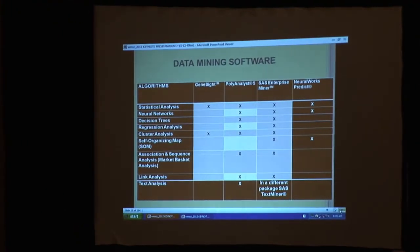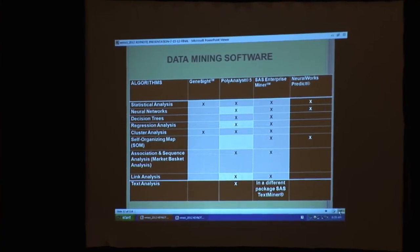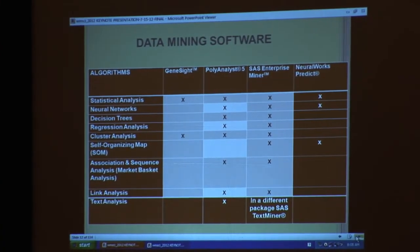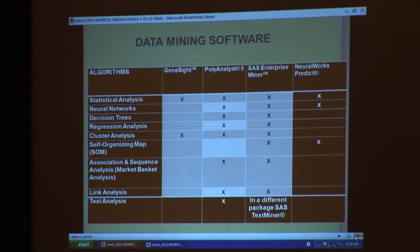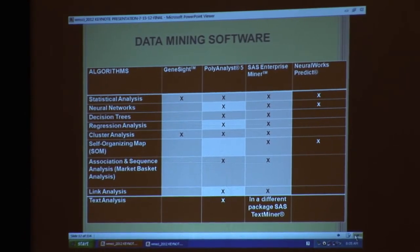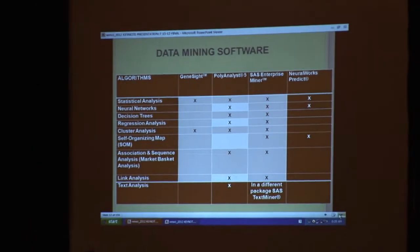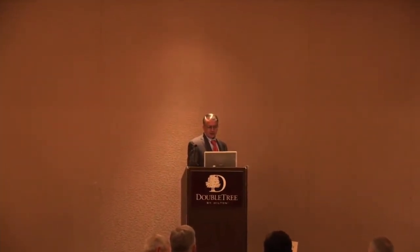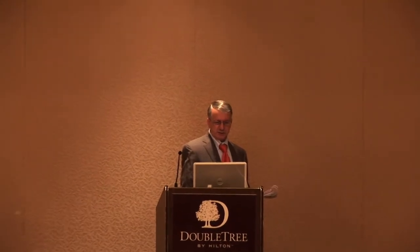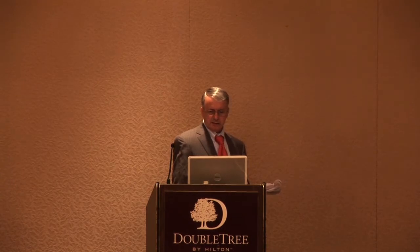Here I have a chart of different data mining software. We looked at GeneSight, Polyanalyst, SAS Enterprise Miner, and NeuralWorks Predict. GeneSight is somewhat narrow, covering statistical and cluster analysis. NeuralWorks Predict is also specialized, covering statistical analysis, neural networks, and self-organizing maps. Polyanalyst has decision trees, regression analysis, cluster analysis, and association analysis, and so does SAS Enterprise Miner. Text analysis is available in Polyanalyst, but it's a separate package — SAS Text Miner — for SAS.